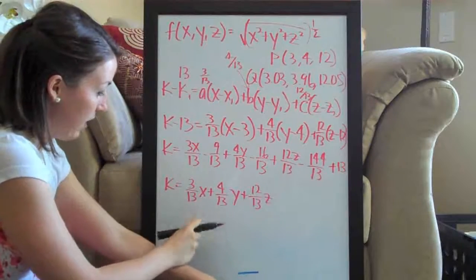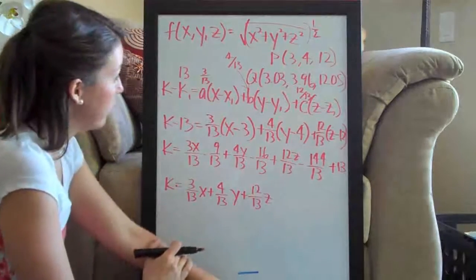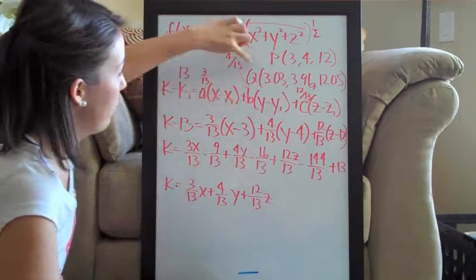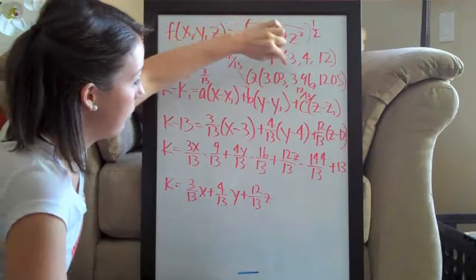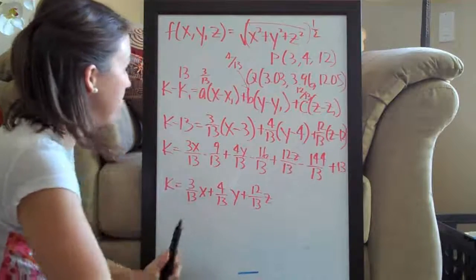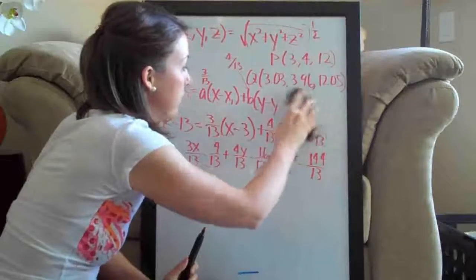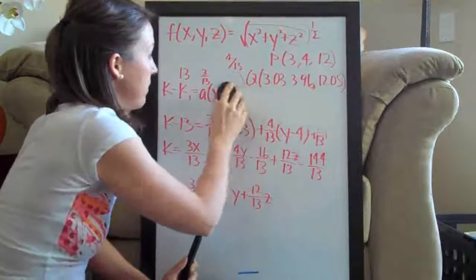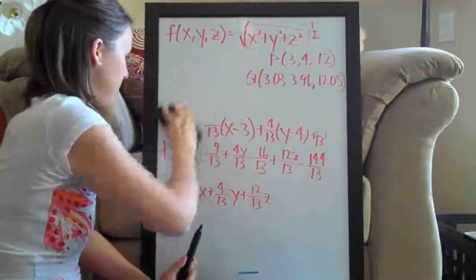We went ahead and solved that. Now the only thing we have left to do for this problem is to plug in the point q, three point zero three, three point nine six, twelve point zero five to this function. So what that's going to look like, let's just go ahead and erase this and make sure you guys can see.